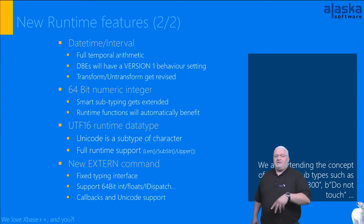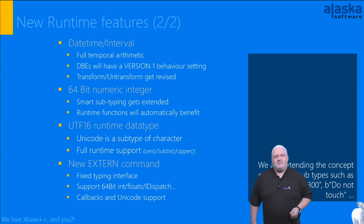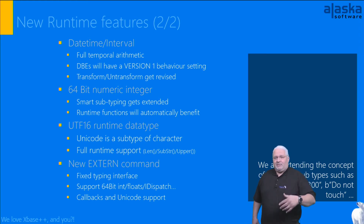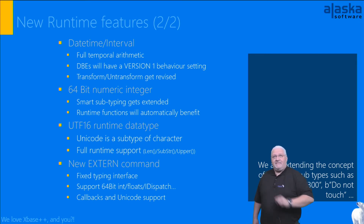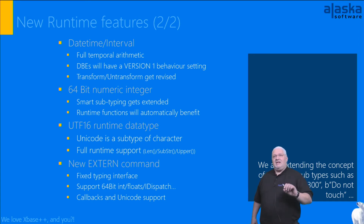We will also add a 64-bit numeric integer to the runtime. Currently the numeric data type has subtypes: integer and float, which are subtypes of numeric. As a developer you don't see this directly, but the compiler uses it for optimizations — for example, a for-loop is internally an integer, generating different native code. Importantly, having the 64-bit integer as a numeric subtype gives us the ability to transparently access 64-bit values in Windows 32-bit APIs.